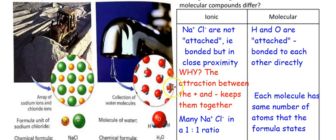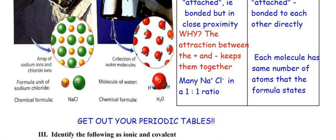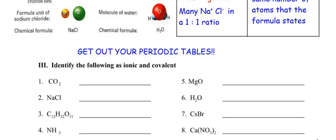I wouldn't call NaCl one molecule — this is what we call a formula unit of sodium chloride in a one-to-one ratio. With covalent water, I have many individual molecules, each with the same number of atoms as the formula states. Now in part three, get out your periodic tables — we're going to identify each of these formulas below as ionic or covalent by looking at the elements in the formula.